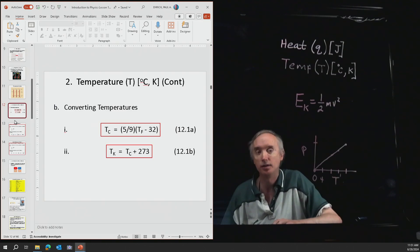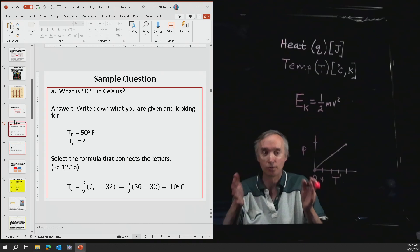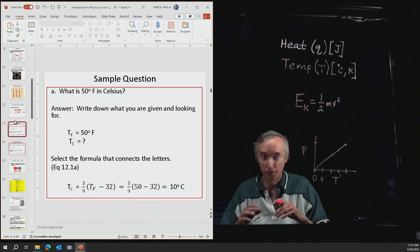That's going to be equation 12.1a. And we're going to plug our numbers into it. Now, remember your order of operations, which means that you need to do what's inside the parentheses first. So 50 minus 32 is going to be 18. And then take 18 and multiply it by 5 ninths, and that's going to be 10. And then put the unit on there. So the unit is going to be degrees Celsius.